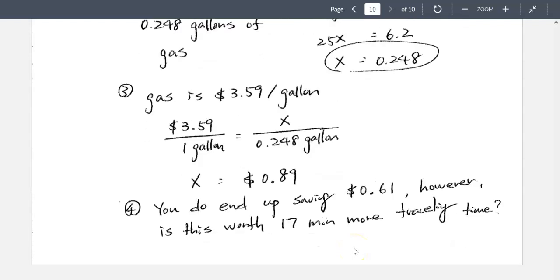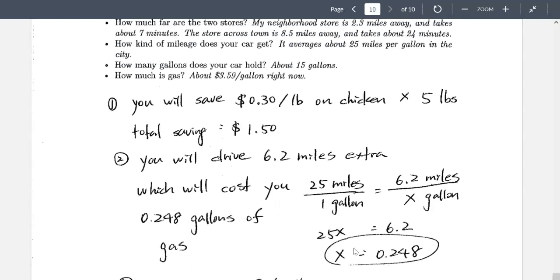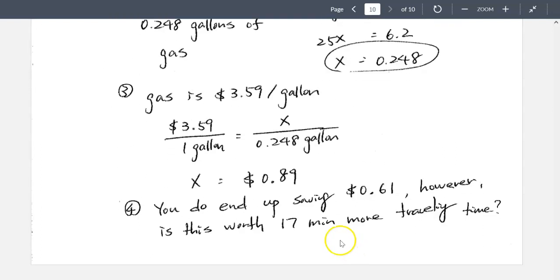So you do end up saving because if you go back to number one, you remember that you save $1.50 on the chicken, but it will cost you $0.89 more on gas to get there. So you do end up, if you subtract the two, you do end up saving $0.61 total. However, is it worth 17 minutes more traveling time? Most of us probably say no.